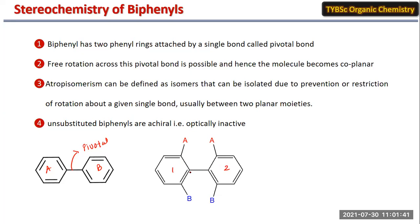The rotation around the pivotal bond is going to be restricted, and due to this the molecules cannot be planar anymore. So we have restricted rotation, and they are not planar molecules.